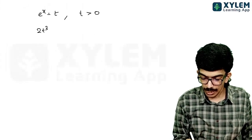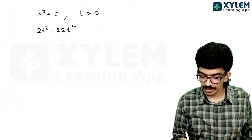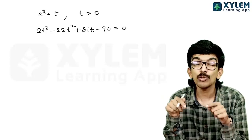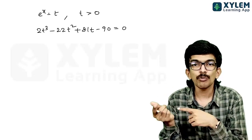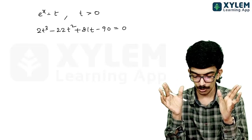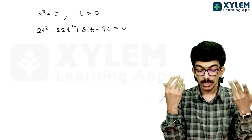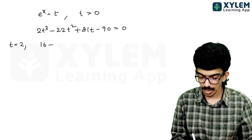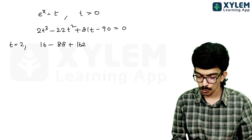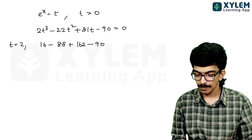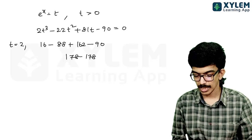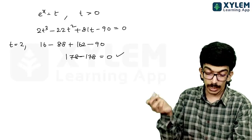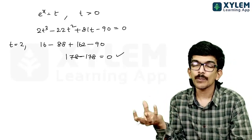Only positive values of t will yield a real value of x. So let's find the actual roots of 2t³ - 22t² + 81t - 90 = 0 by trial and error. Substituting t = 2: 16 - 88 + 162 - 90 = 178 - 178 = 0. Yes, t = 2 is a solution.